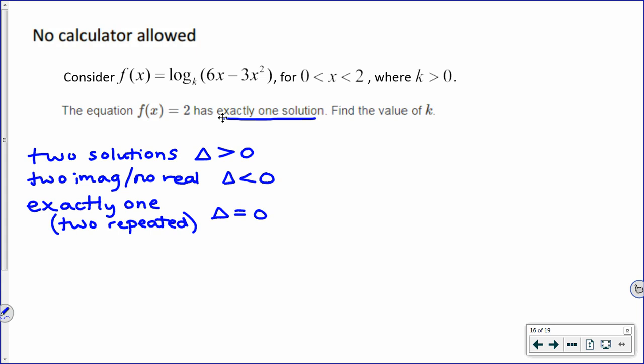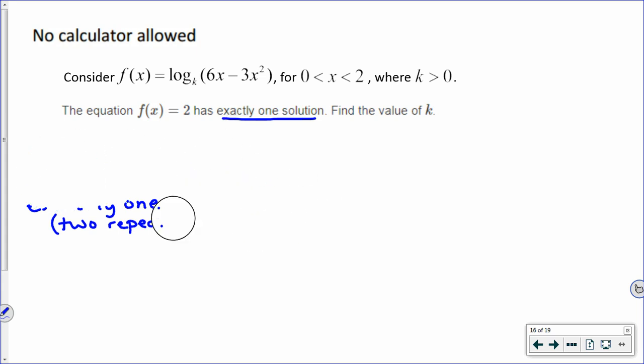So here we have exactly one solution. The discriminant is going to equal zero. But we have some work to do before we can even see a discriminant in this question. Now we can go back up to the top where it says consider f(x) equals, and we have a log with a base k. We're told x has to be between zero and two, and k is greater than zero.